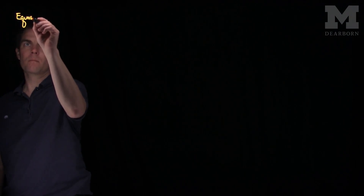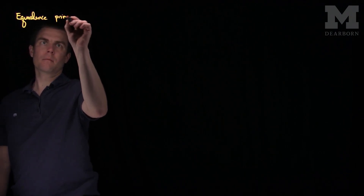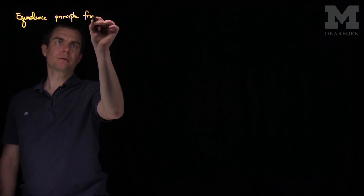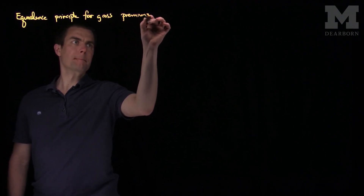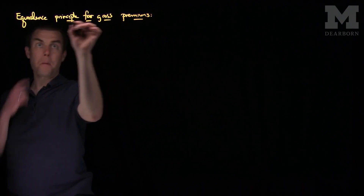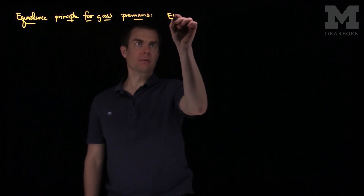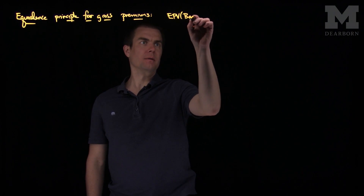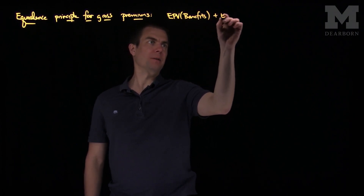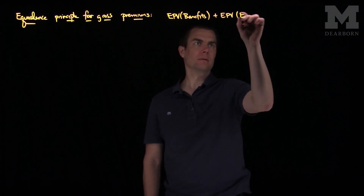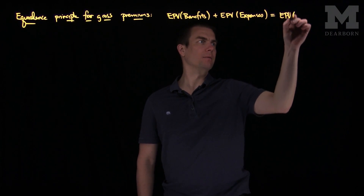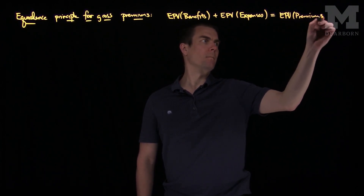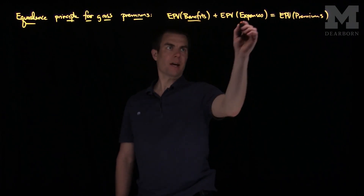The equivalence principle for gross premiums states that the expected present value of benefits plus the expected present value of expenses must equal the expected present value of premiums. So your premiums must be sufficient to cover your benefits and your expenses.